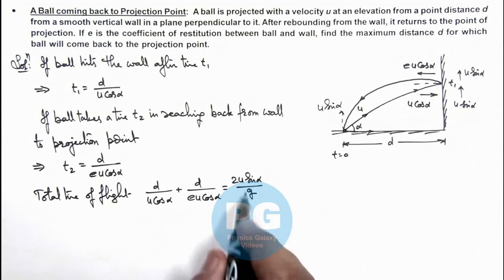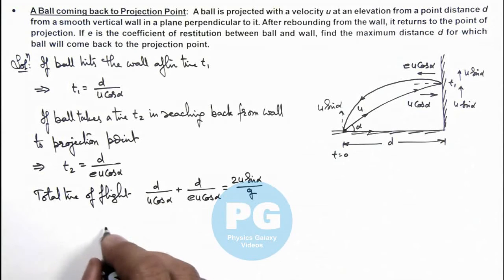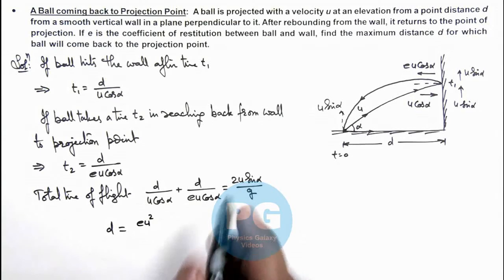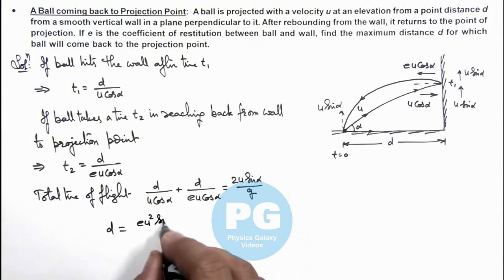So on simplifying this relation we can get the value of d is equal to - this can be written as e times u square, this sin alpha cos alpha we can write as sin 2 alpha divided by g multiplied by 1 plus e.